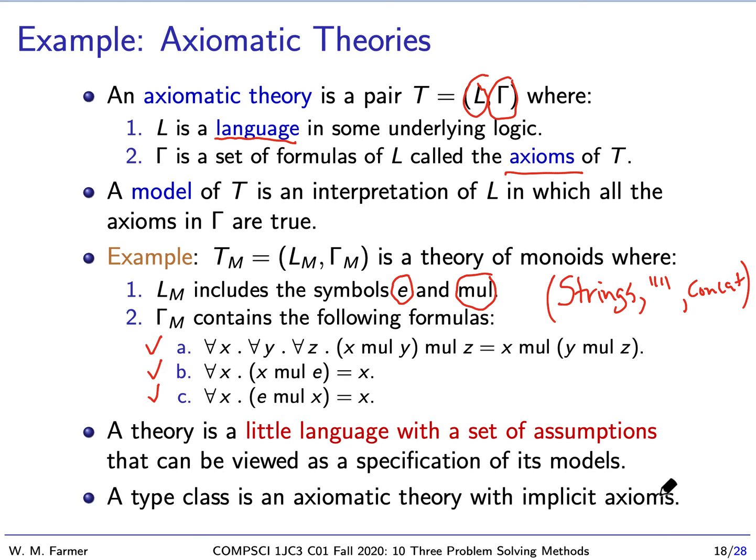A theory is a little language with a set of assumptions, and it can be viewed as a specification of its models. A type class is an axiomatic theory with implicit or only partially explicit axioms. I said there were these default implementations; you can think of those as axioms. So we're going to stop here with our second problem-solving method, little languages.